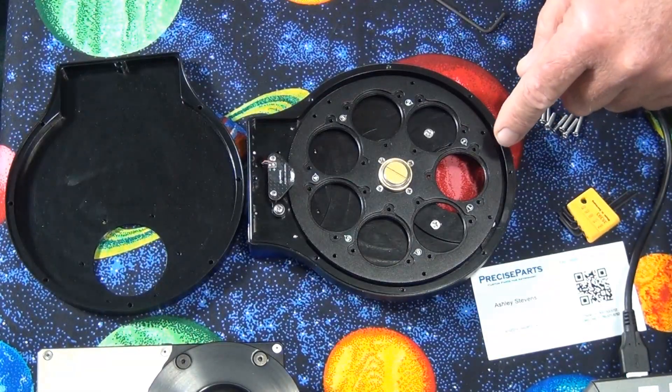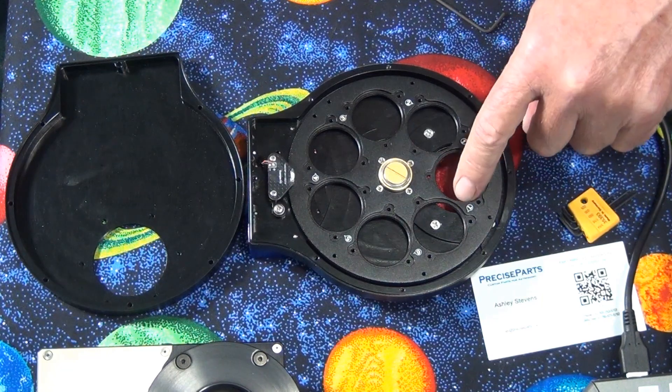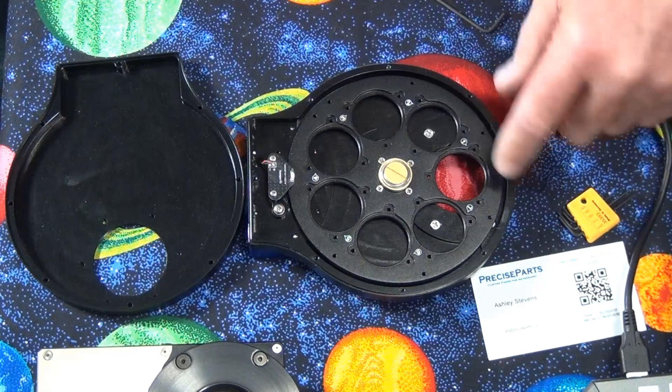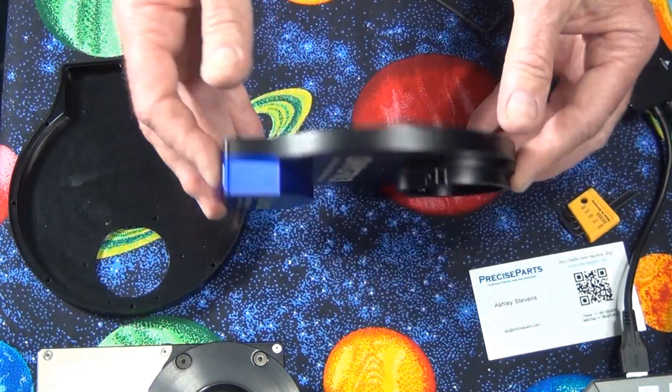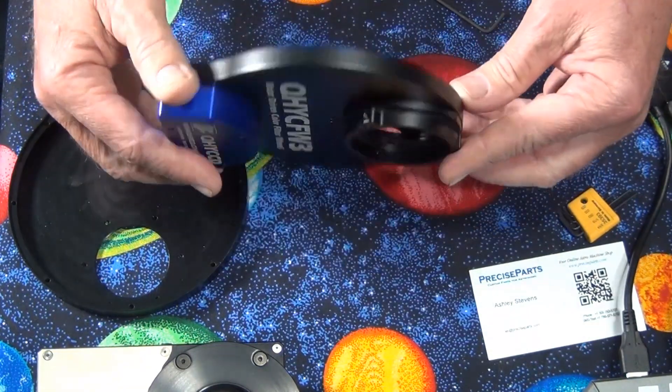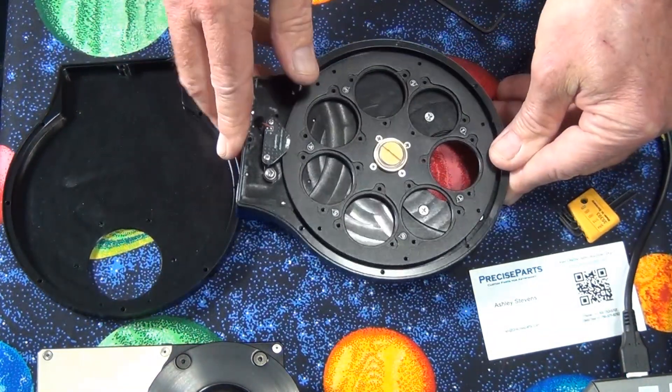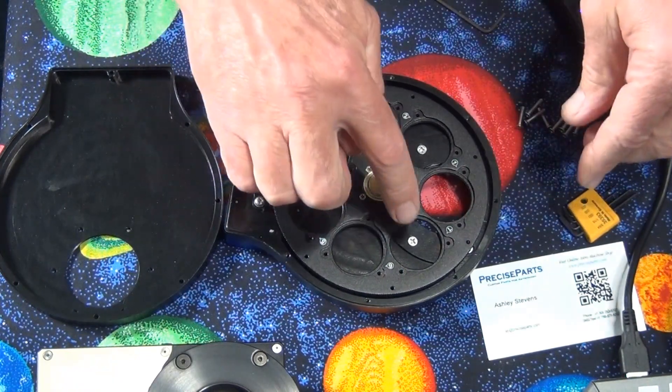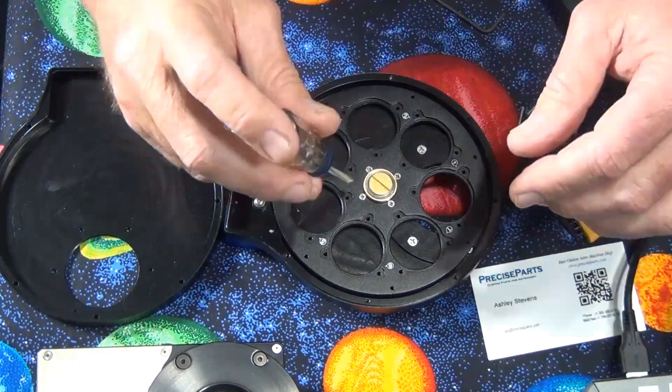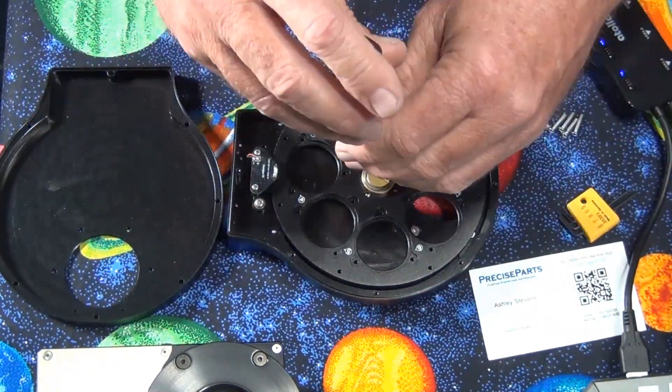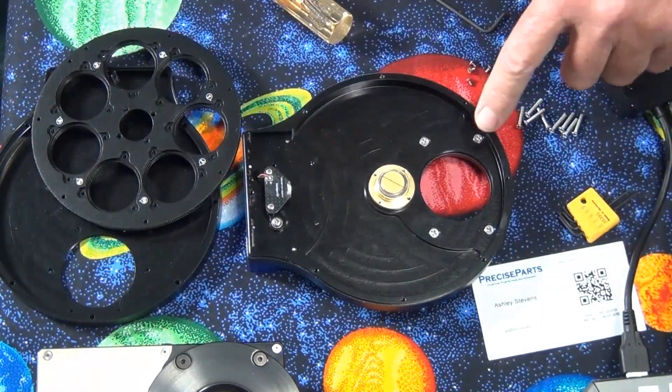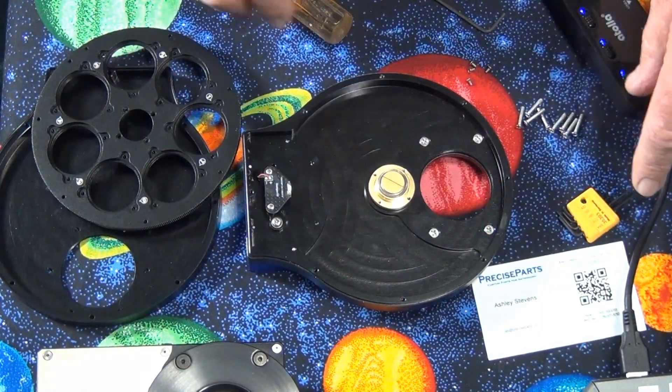And you saw as we powered it on, it went to position one, which makes a lot of sense. But what I have to do next is I have to remove this adapter on the front here. And it looks like there's four screws. I can see two screws here, and there's two screws behind the filter wheel.